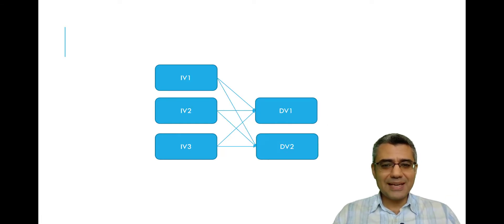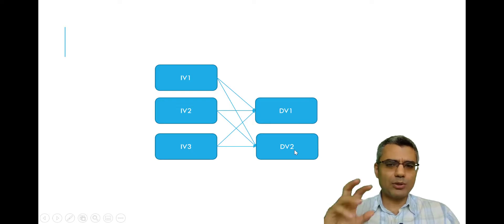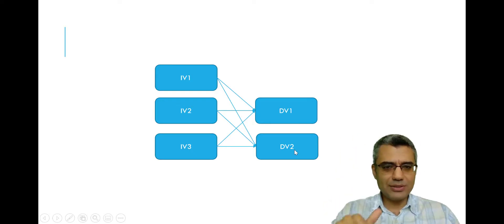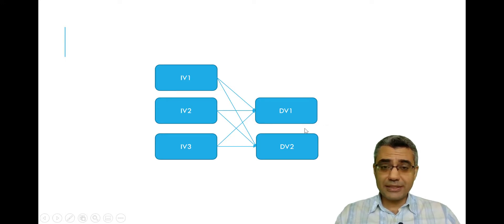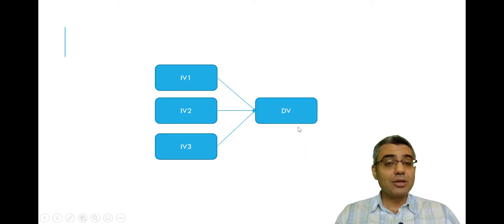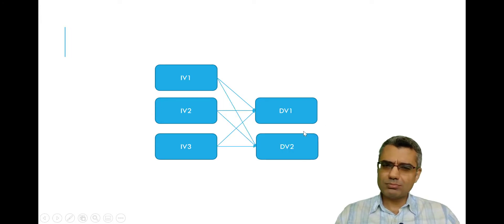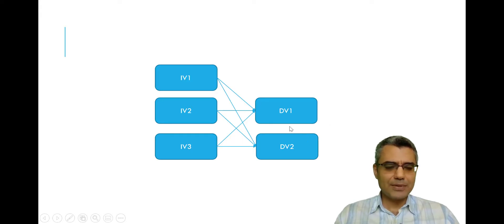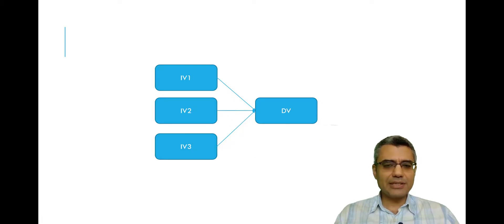But many models these days have several dependent variables. In this example, I'm showing a model with two dependent variables — I want to predict two factors using the independent variables. With multiple regression analysis you can only have one dependent variable, so most models these days with more than one dependent variable present a challenge.